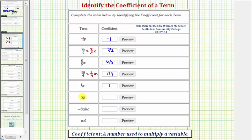Next we have three t, which means three times t, and therefore the coefficient is three.